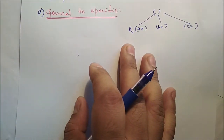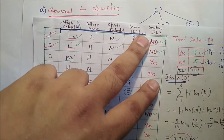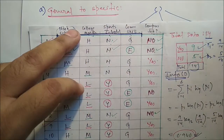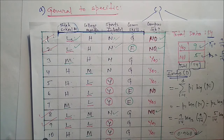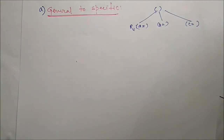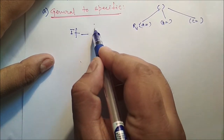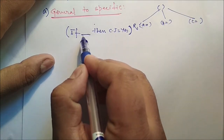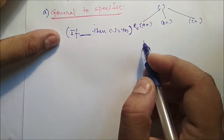We can explain this with our previous example — 14 data points, four input attributes (high school marks, college marks, sports interest, communication skill), and one class label (campus job: yes or no). We start with one empty rule: if [blank] then campus job = yes — no precondition or antecedent, just the consequence. Then we append candidate preconditions: if high school marks = low, if high school marks = medium, if sports interested = yes, if communication skill = good.